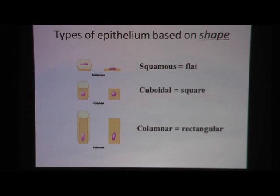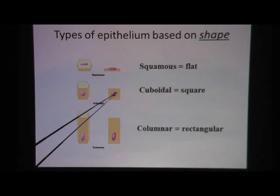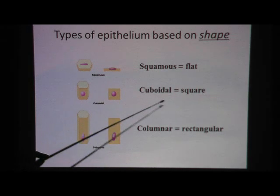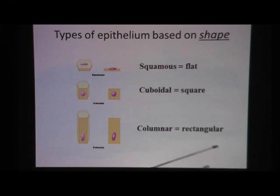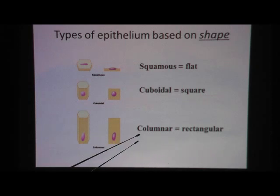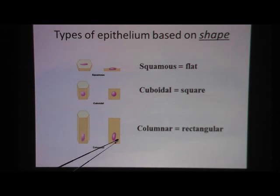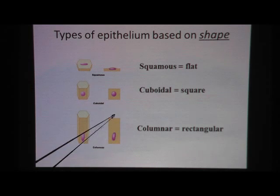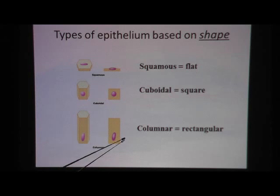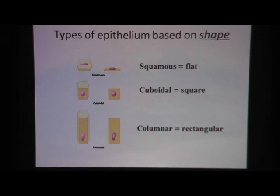If the cell is more square — that is, the height is equal to the width — then we call it cuboidal. And if the cell is rectangular — that is, the height is much taller than the width — then that's columnar.